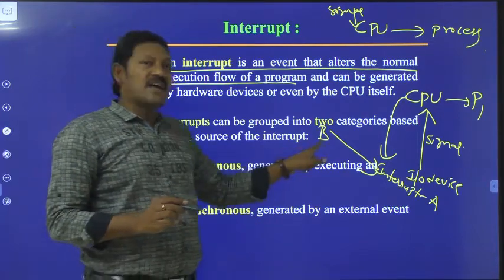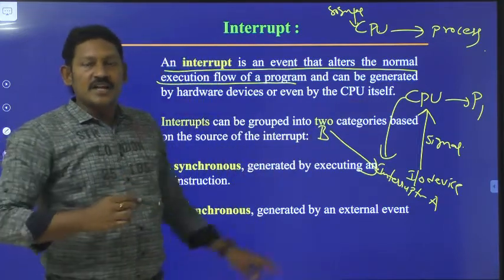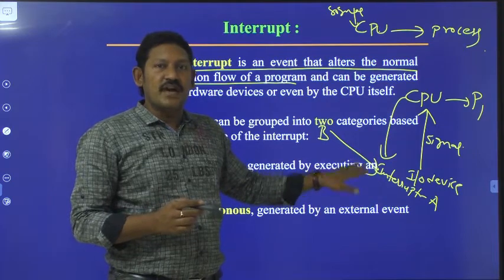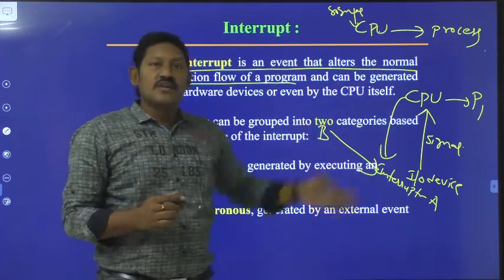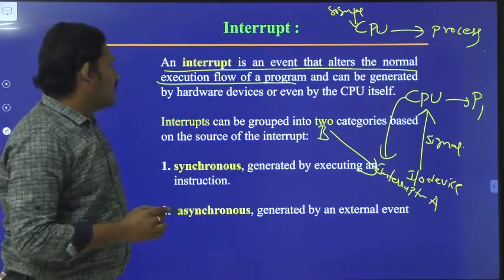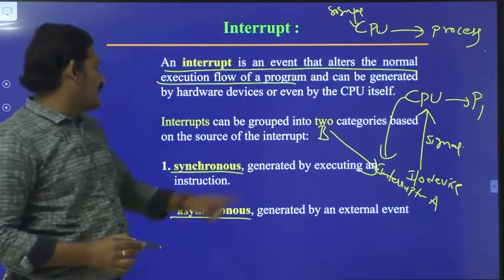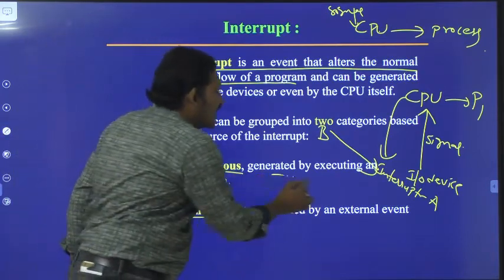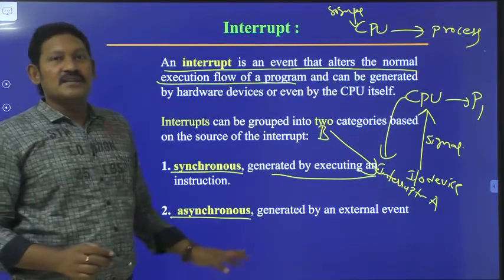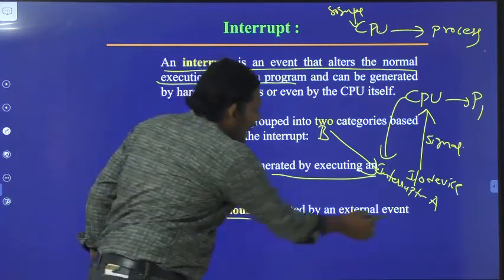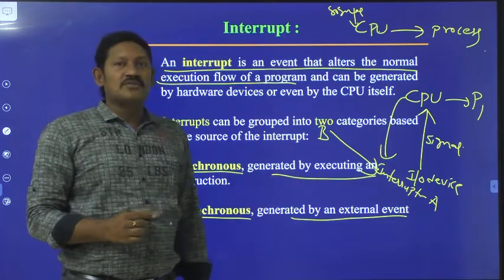The interrupt which has the highest priority will be executed first. Suppose B has the highest priority — the CPU will execute interrupt B. After that, it will continue with interrupt A. After completing both interrupts, the CPU will continue its original process. Interrupts are of two categories: synchronous, which is generated by executing an instruction, and asynchronous, which is triggered by external devices.